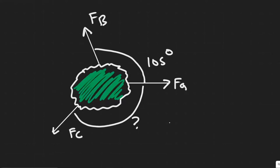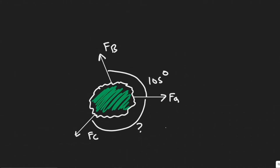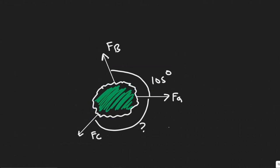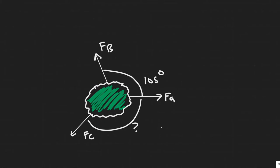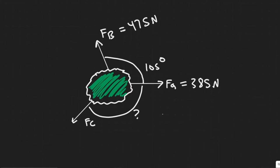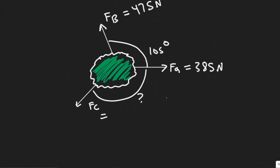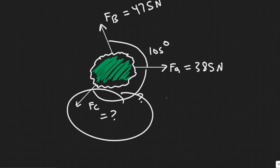In this problem we're told three forces are applied to a tree sapling as shown in the figure to stabilize it. FA equals 385 newtons and FB equals 475 newtons. We need to find FC in magnitude and direction.